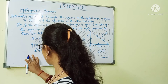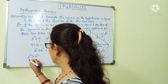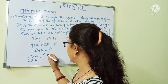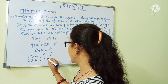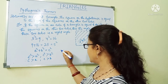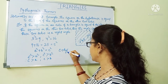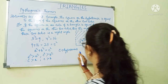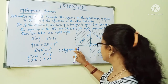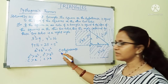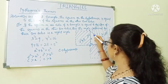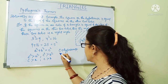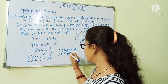So, C squared will always be greater than A squared, therefore C will always be greater than A. If C squared is greater than B squared, so C will always be greater than B. C is known as the hypotenuse because it is the greatest side of this right-angled triangle, and its opposite angle will always be 90 degrees.